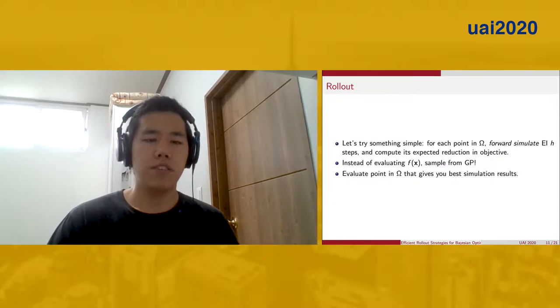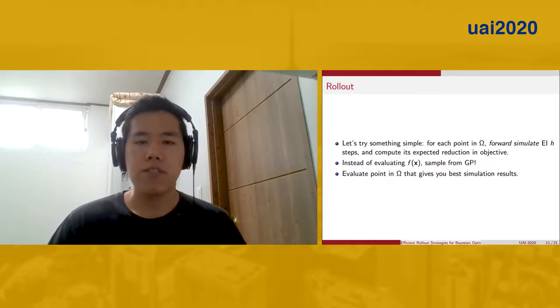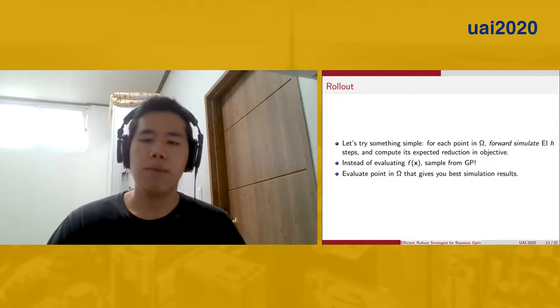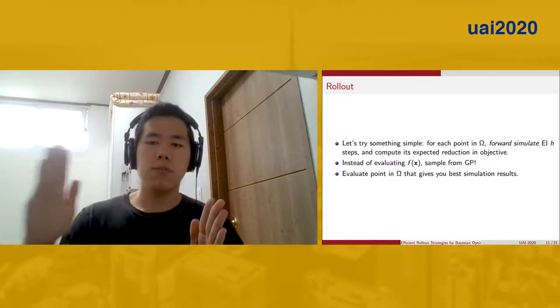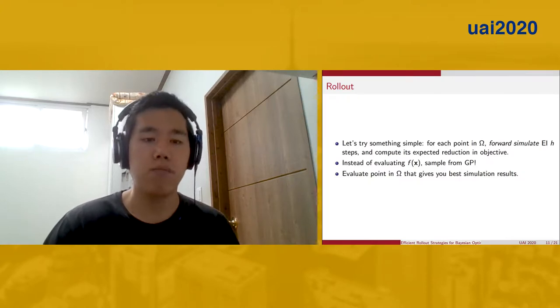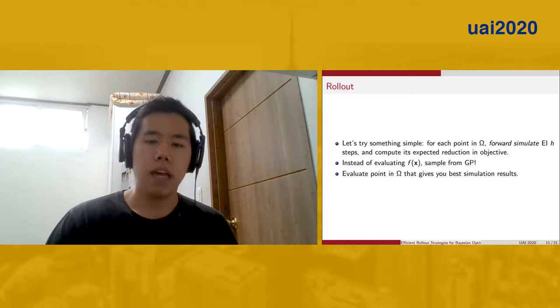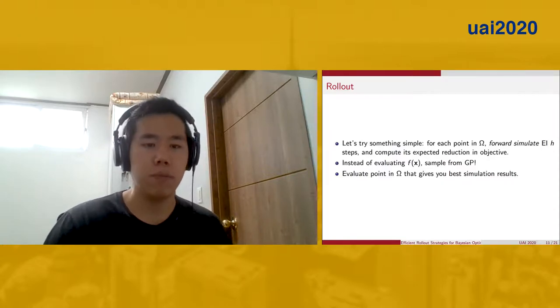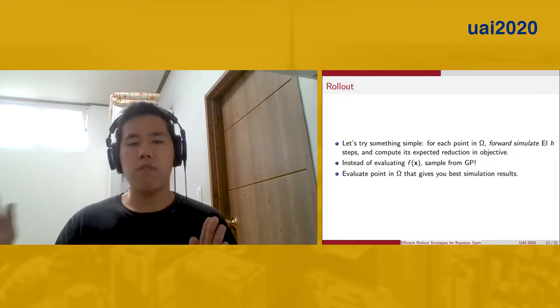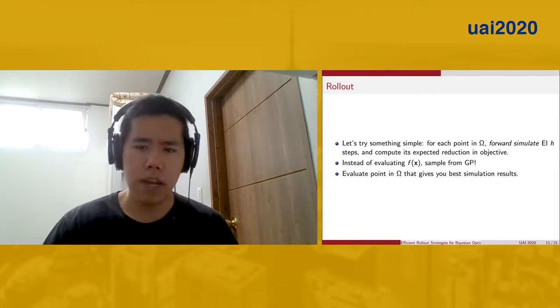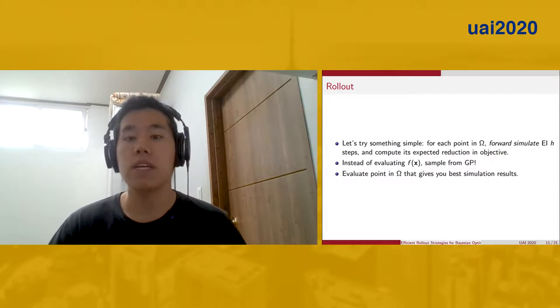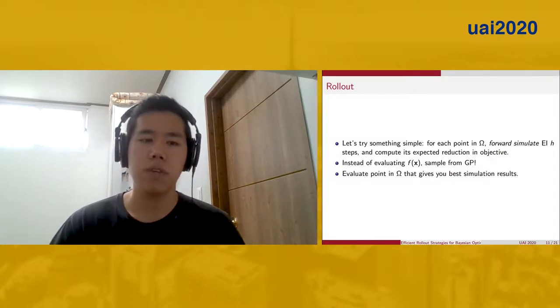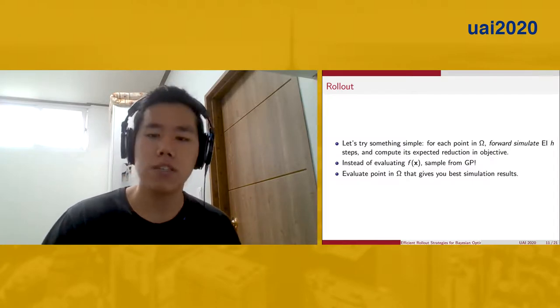This is a little vague, so let's be more straightforward. What we're going to do is, for each point in our optimization domain omega, we're going to forward simulate BO using expected improvement H steps into the future. Instead of evaluating f, which is expensive, we sample from our stochastic model, which is cheap. So we're going to do this forward simulation for each point in our domain, and we're going to pick out the best one that gives us the best simulation results. This entire process is known as rollout.